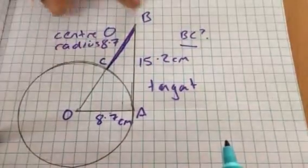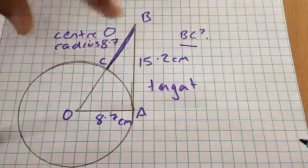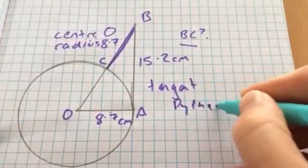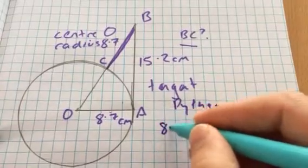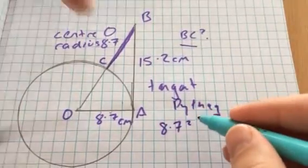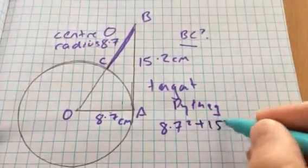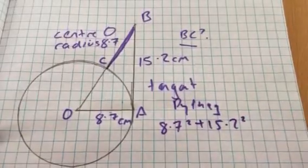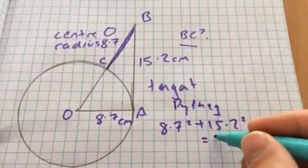So you want to find OB first, and by that you're going to use Pythagoras, so 8.7 squared. So I'd have to use Pythagoras, so 8.7 squared plus 15.2 squared. You get 306.73.